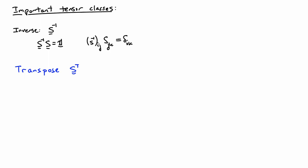Another tensor that comes up quite a bit is the transpose of a tensor. Starting with tensor S, its transpose is denoted S superscript T and is also defined operationally. It is the tensor that satisfies the relationship: for all vectors a and b, the dot product of a with S applied to b equals the dot product of b with S transpose applied to a — swapping the order of operations.